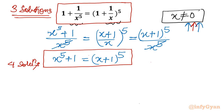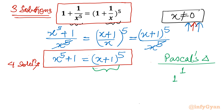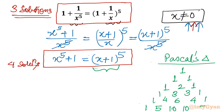Let's get started by using Pascal's triangle, since we need to expand x plus 1 whole power 5. I will write the coefficients row by row: 1 1 for power 1; 1 2 1 for power 2; 1 3 3 1 for power 3; 1 4 6 4 1 for power 4; and the required row for power 5 is 1 5 10 10 5 1.